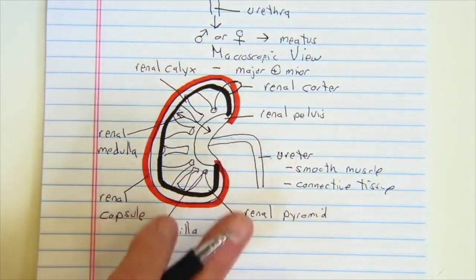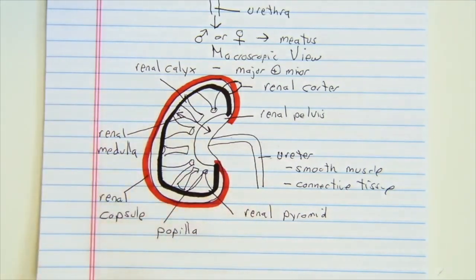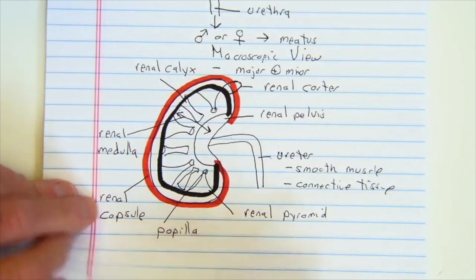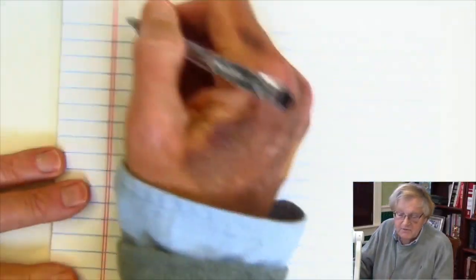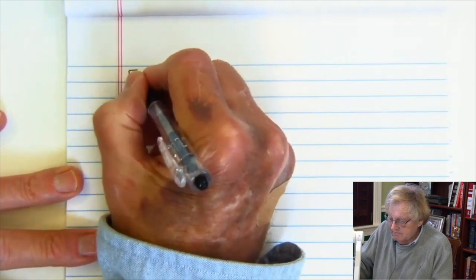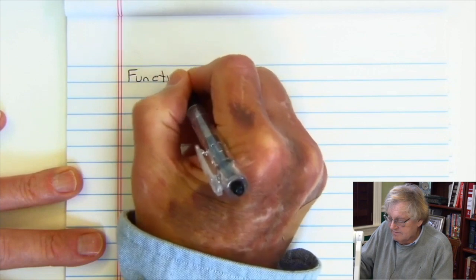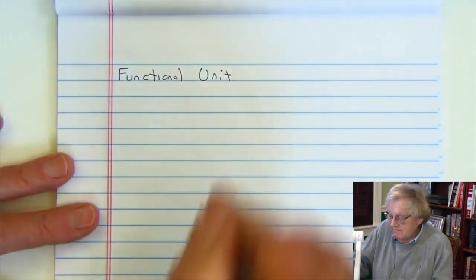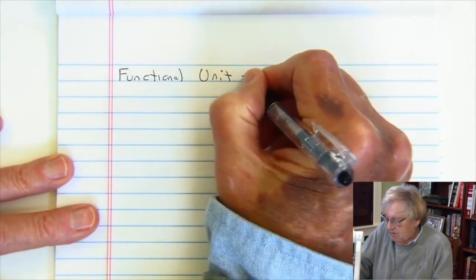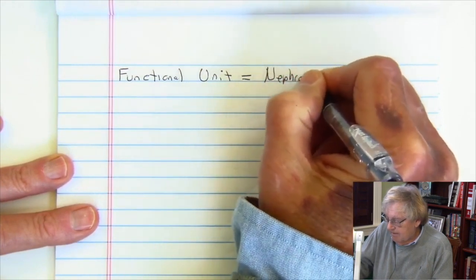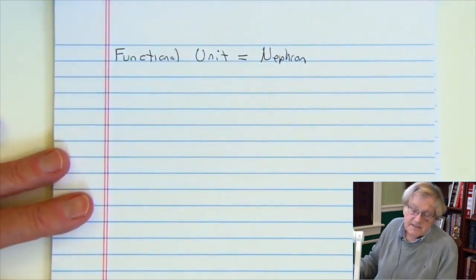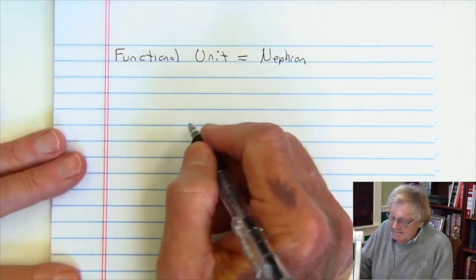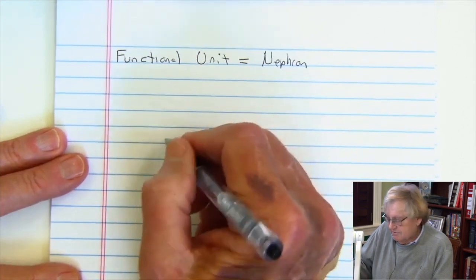Now that we've got the big picture of what the kidney looks like, let's take a look at what's really located inside. The kidney has something called a functional unit. Just like bone has an osteon or muscle has a sarcomere, the functioning unit of the kidney is going to be called the nephron.